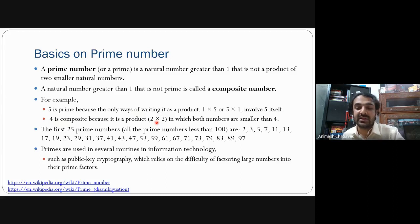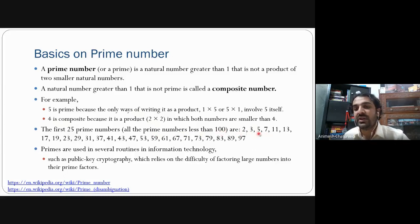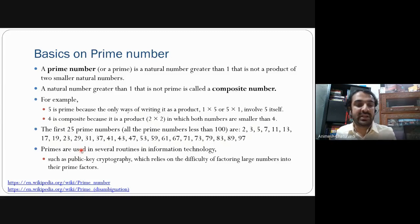The first 25 prime numbers less than 100, which we need to study for the primality test, are: 2, 3, 5, 7, 11, 13, 17, 19, 23, 29, 31, 37, 41, 43, 47, 53, 59, 61, 67, 71, 73, 79, 83, 89, 97.